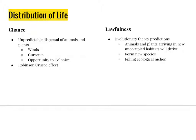The distribution of life depends on chance and lawfulness. Chance, because the dispersal of plants and animals is random and depends on winds, currents, and opportunity to colonize — like the finches that arrived on the Galapagos Islands, got marooned, and thrived. This is called the Robinson Crusoe effect, which states that time and chance determine who gets marooned on the island. Lawfulness, because according to evolution theory, it is predicted that plants and animals will evolve and thrive in new unoccupied habitats, forming new species and filling ecological niches. The various types of finches in the Galapagos studied by Darwin all came from a common ancestor, which evolved and thrived differently depending on their habitat.